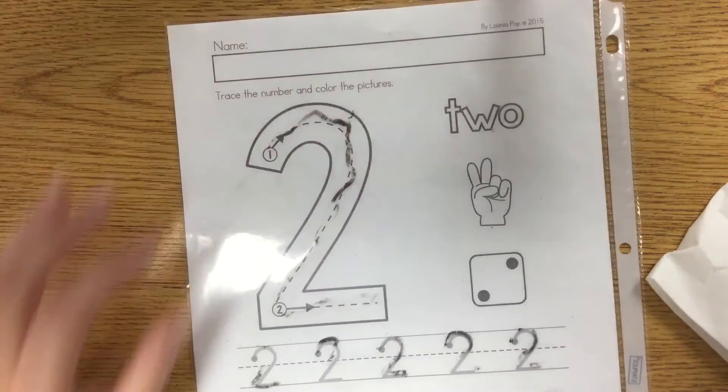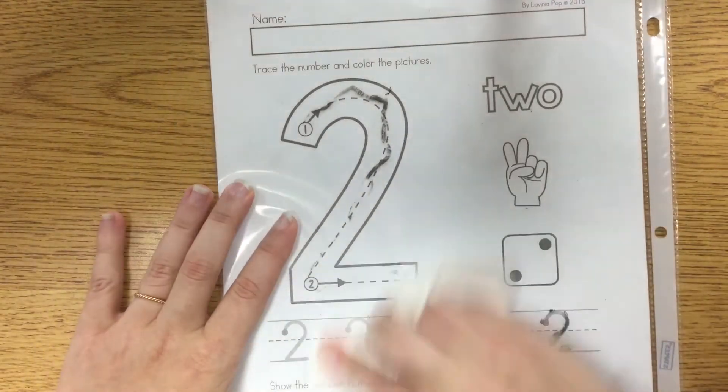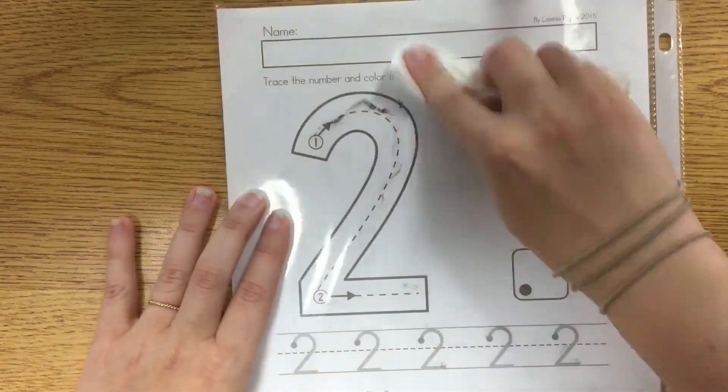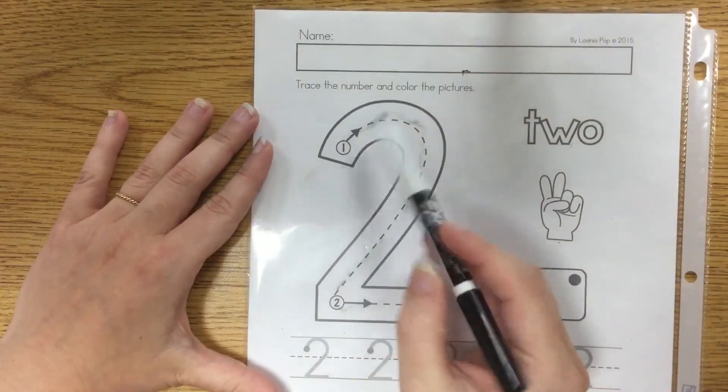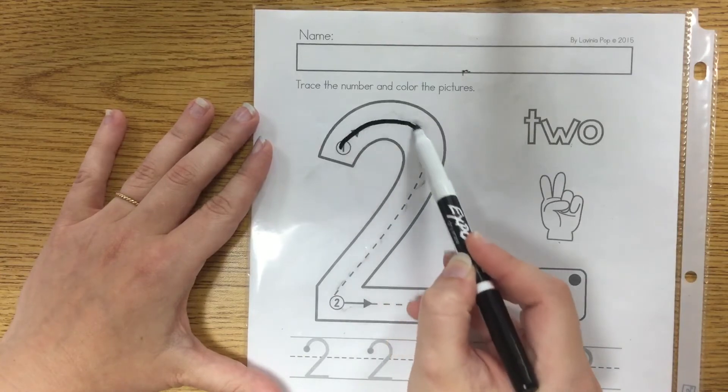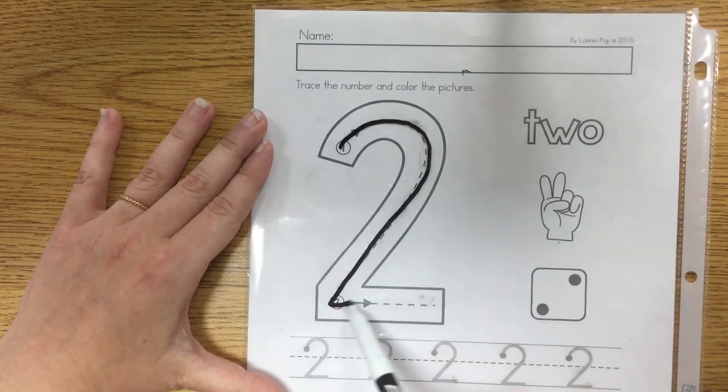And then for the number two, uh oh someone didn't clean this one. For the number two I tell them to start over here on the number one and they say around and over.